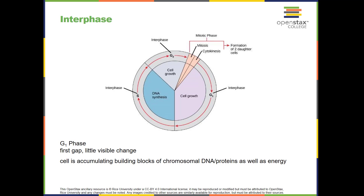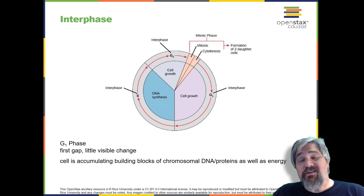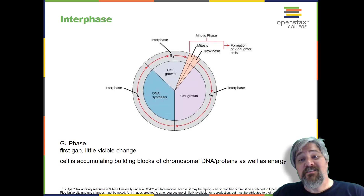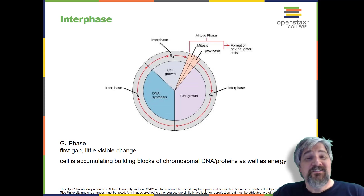During interphase, the cell undergoes normal processes while also preparing for cell division. For a cell to move from interphase to the mitotic phase, many internal and external conditions must be met. The three stages of interphase are called G1, S, and G2.